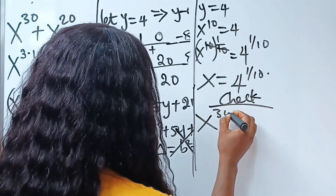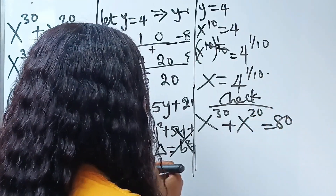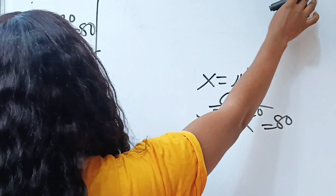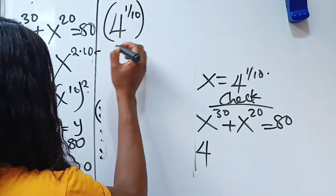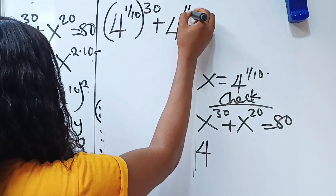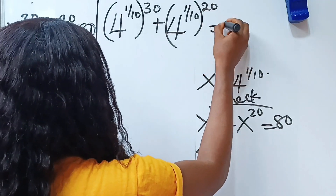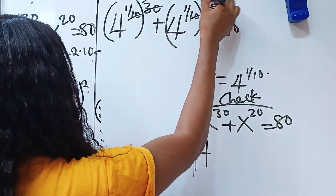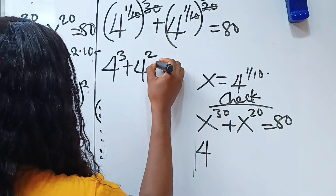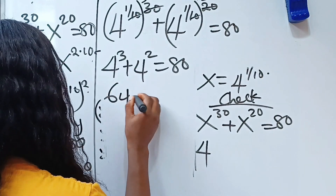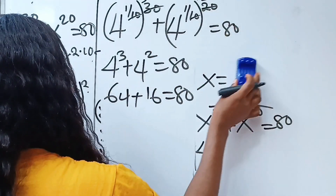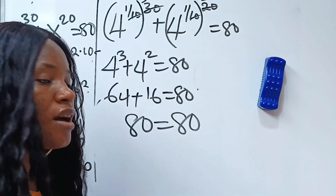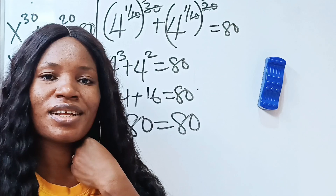Let's verify: the original equation is x to the power of 30 plus x to the power of 20 equals 80. Substituting x equals 4 to the power of 1 over 10: we get 4 to the power of 1 over 10 raised to the power of 30, plus 4 to the power of 1 over 10 raised to the power of 20. Multiplying the exponents gives 4 to the power of 3 plus 4 squared, which is 64 plus 16 equals 80. And 80 equals 80, so our answer is verified. Thank you for watching and have a lovely day.